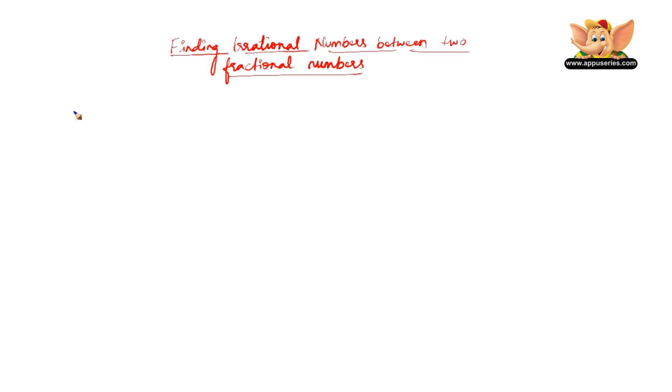In this video let's learn how to find an irrational number between two fractional numbers. Let us find an irrational number between 1/7 and 2/7.